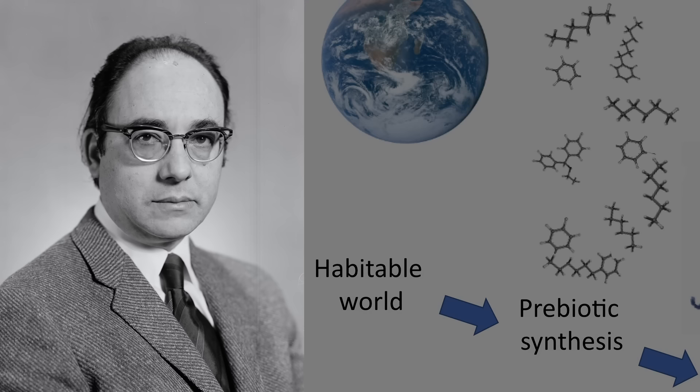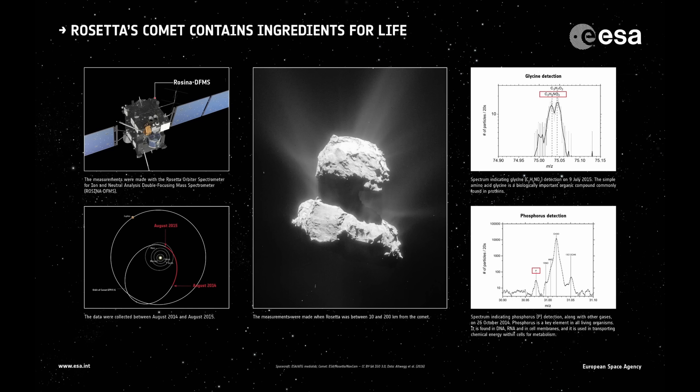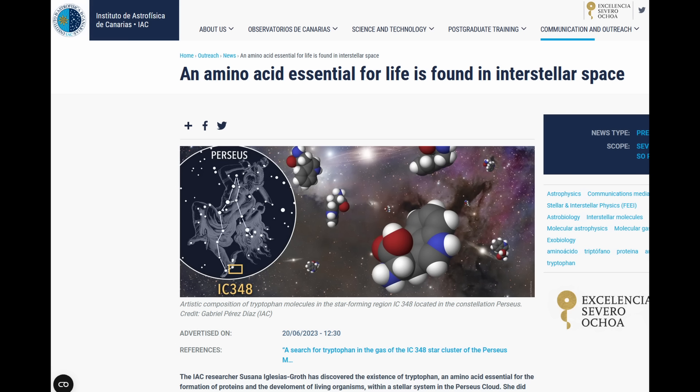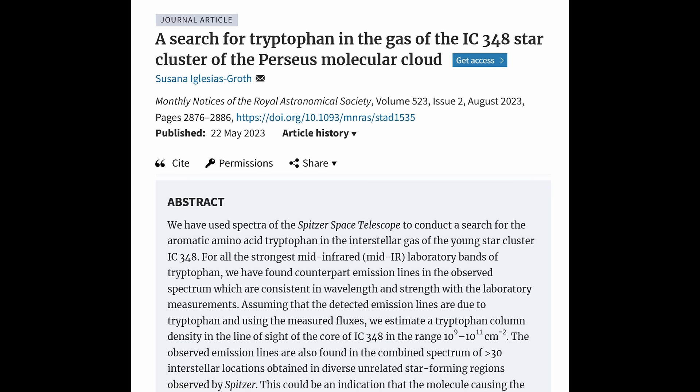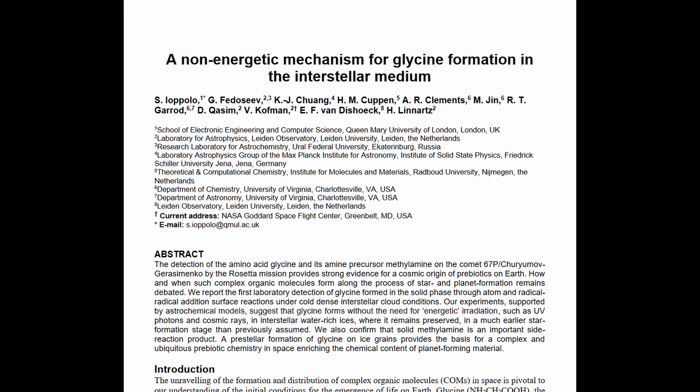Stanley Miller considered that the simplicity with which he was able to create the precursors of life meant that we should be able to see it all across the universe. Not long ago, amino acids and other organic compounds were detected in the comas of comets Wild 2 and 67P. In a recent study, a researcher discovered the existence of tryptophan, an amino acid essential for the formation of proteins and the development of living organisms within a stellar cloud system in the Perseus cloud. When they then estimated the temperature of the cloud it came in at close to 0 degrees Celsius. How and when such complex molecules form remains a subject that is debated. Dark chemistry is a term that refers to chemistry without the need for energetic radiation.